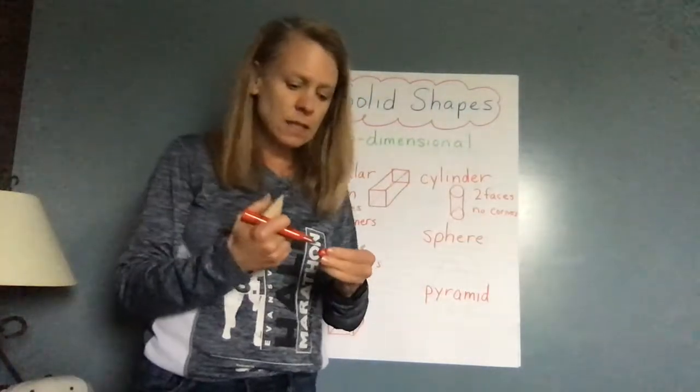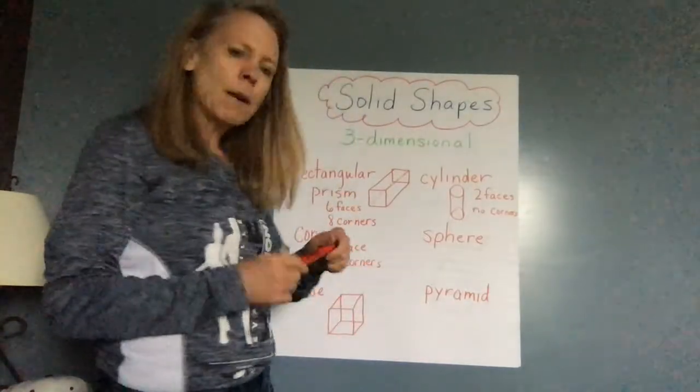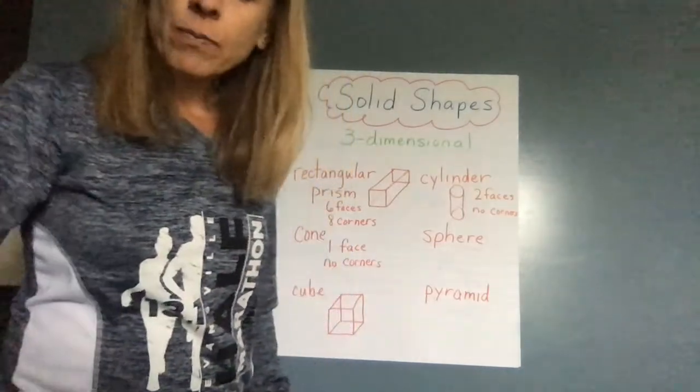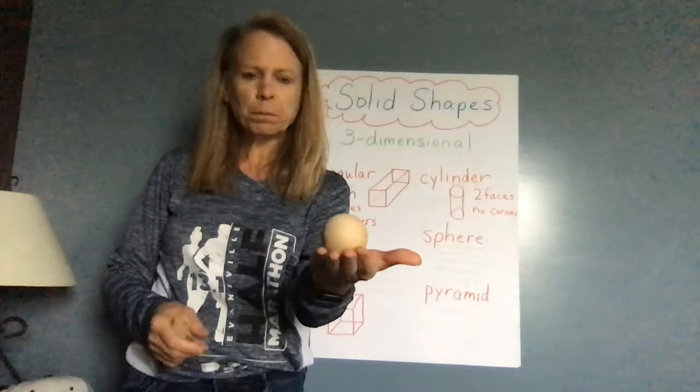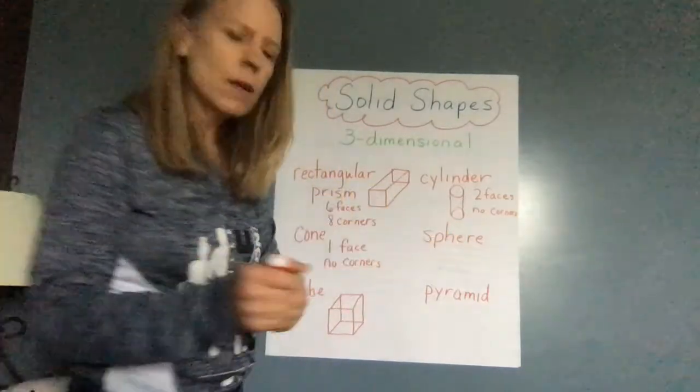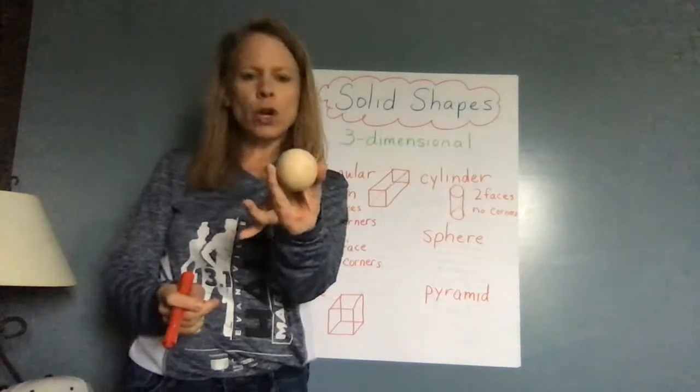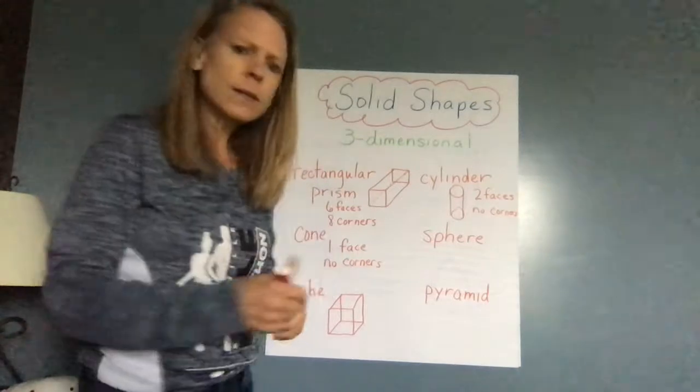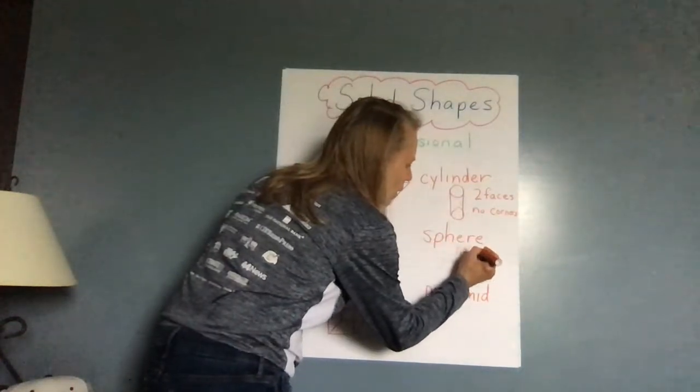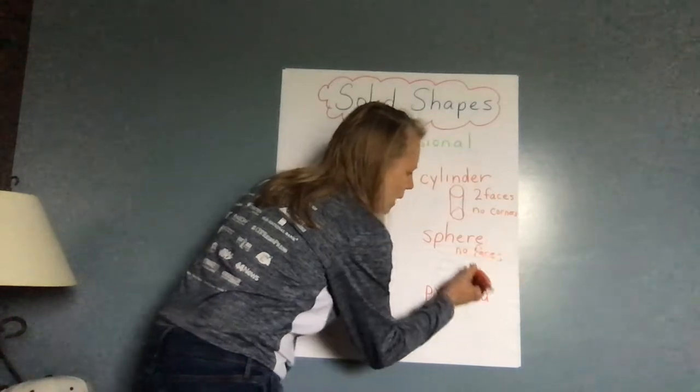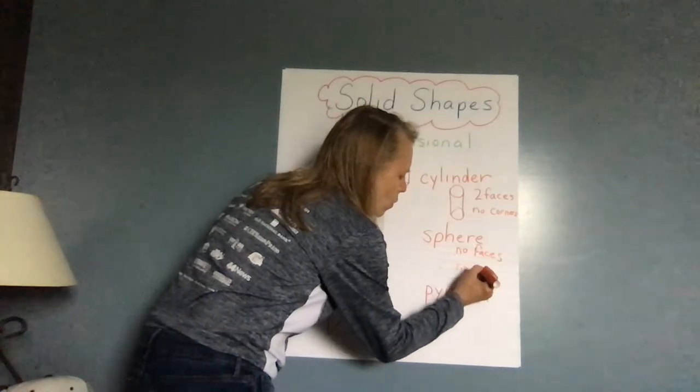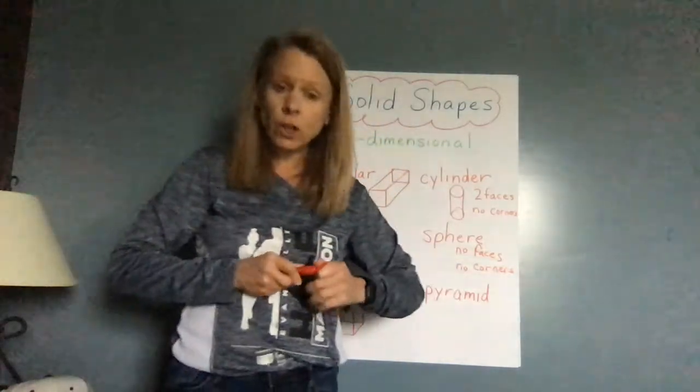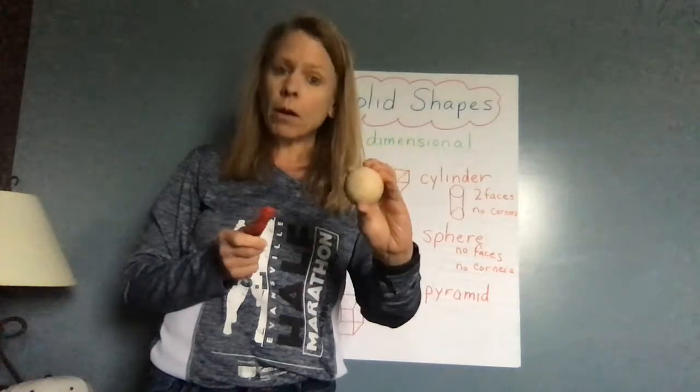The next one is a sphere. It has S-P-H. Remember, the P-H goes together to make that F sound. A sphere. That's a sphere. Our earth is a sphere. And it has no faces and no corners. Something you know that is this shape. Our earth is a sphere. A ball is a sphere.